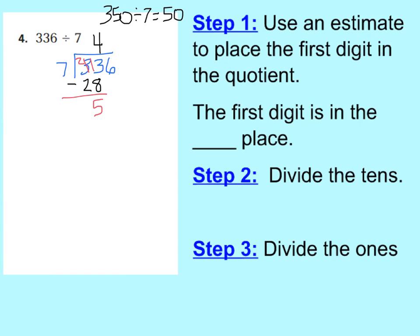Now I can drop down my ones, which is 6 ones. I'm going to add those 6 ones to my 5 tens, which makes 56 ones. So now step 3 is to divide my ones. I have 56 ones. If I have 56 units and I want to put them in 7 different piles, I know I can have 8 in each pile, because 8 times 7 is 56. It helps to know your facts — it makes it go by a lot faster. Subtract to see how many are left over: we have 0 left over, so there is no remainder.